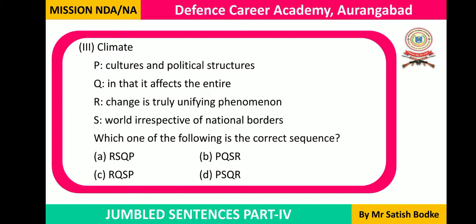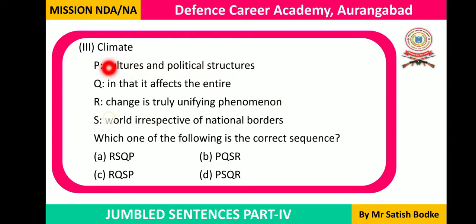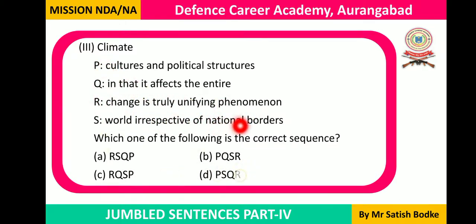Question number three is about climate change, with the sentence split into five parts. The first part is a noun, which is the subject. This is an assertive sentence, which obviously needs to begin with a subject. 'Climate change' is a frequently used noun phrase. 'Climate change is truly a unifying phenomenon' — what kind of phenomenon? It unifies almost every section of humanity. So the answer obviously begins with R.